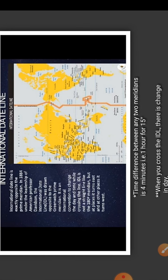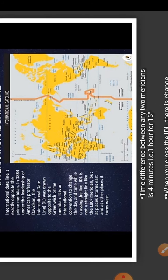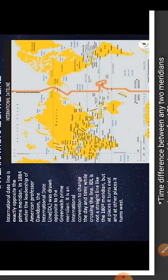The International Dateline is exactly opposite to the Prime Meridian. In 1884, under the leadership of American professor Davidson, the International Dateline was drawn opposite to the Greenwich Prime Meridian. The Greenwich Prime Meridian is exactly opposite — at 180 degrees — where the IDL, that is the International Dateline, was drawn.